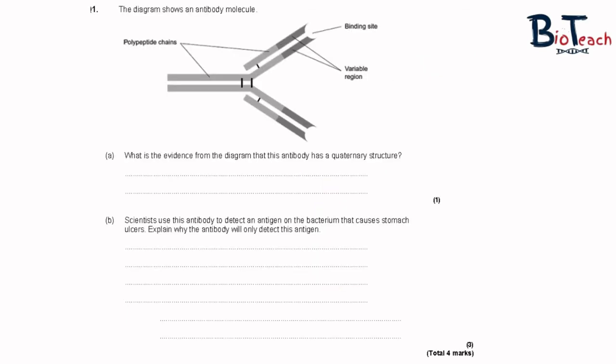Here's an example exam question focusing on antibodies. A diagram of an antibody is given with a two-part question. Part A asks what evidence from the diagram shows the antibody has a quaternary structure, for one mark. Part B asks you to explain why this antibody will only detect a particular antigen on a bacterium that causes ulcers. Feel free to pause the video now to give this question a go.